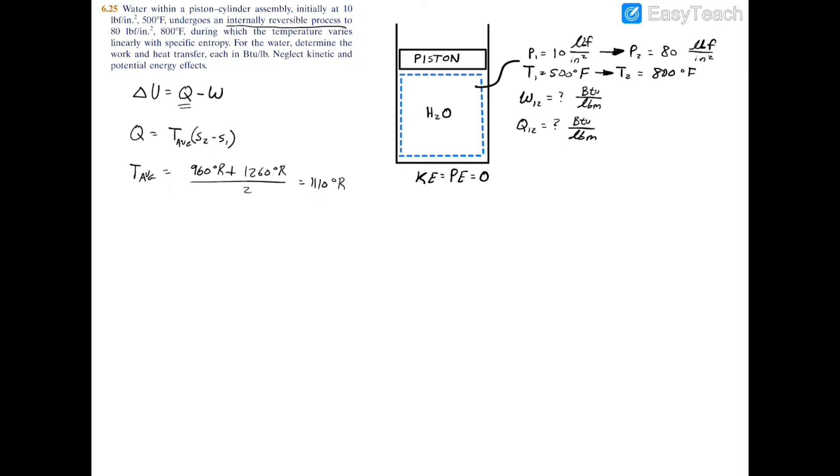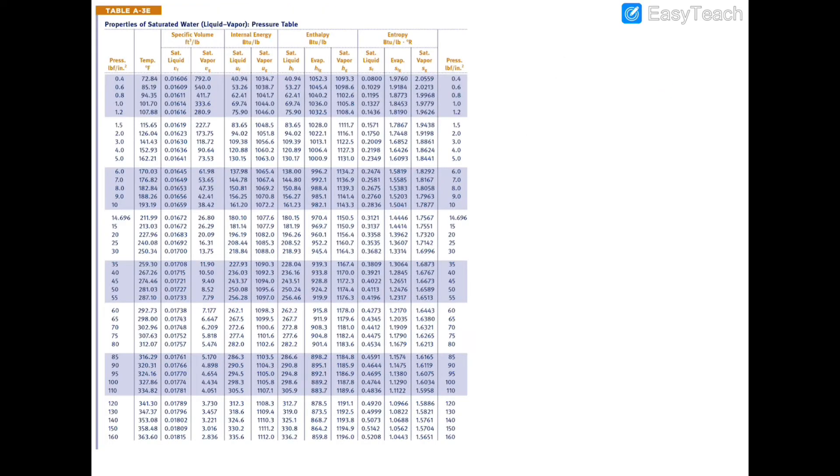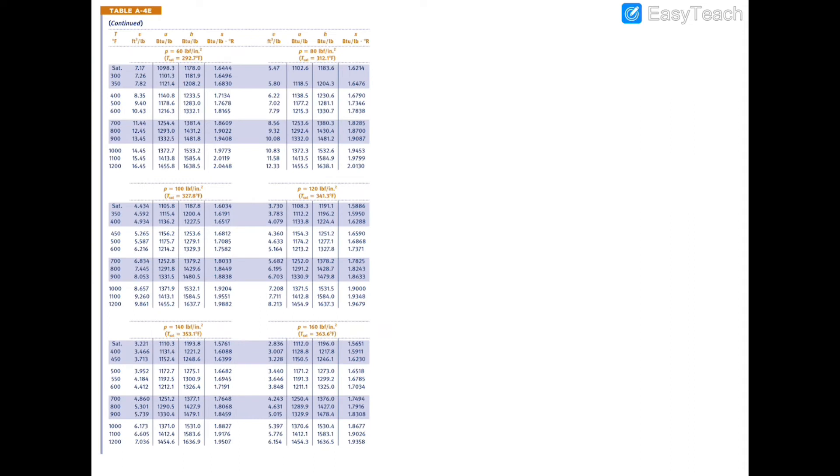Now with our average temperature, let's look for our specific entropies. For s2 we're going to be looking at 800 degrees Fahrenheit and 80 psi. We'll turn to our saturated table, Table A3. If you turn to 80 psi, you have a saturation temperature of 312. We were at 800 Fahrenheit, which is way higher than this, so we're in the superheated region. If I turn to Table A4E, we have 80 psi and a temperature of 800 degrees Fahrenheit, and therefore we have a specific entropy of 1.87 BTU per pound degree Rankine.